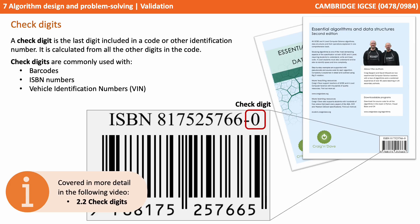A slightly more advanced method of performing validation is check digits. This is the last digit included in a code or some other form of identification number, and it's calculated from all the preceding digits in the code. They're commonly used with barcodes, ISBN numbers on books, and vehicle identification numbers. We won't go into check digits in detail here as we have a completely separate video on it which we've listed at the bottom of the screen.